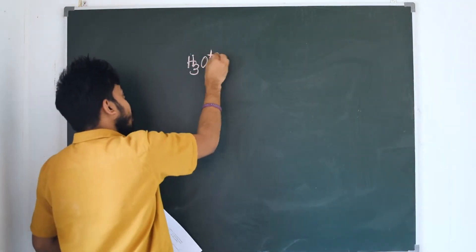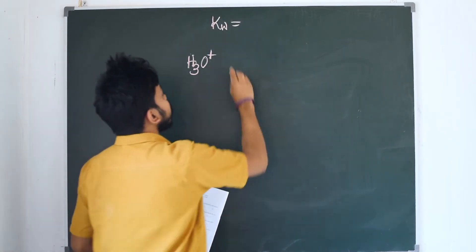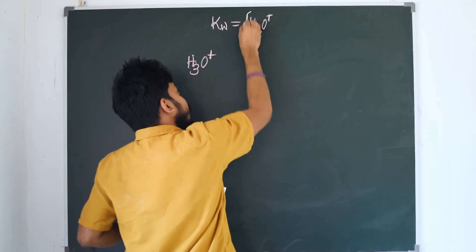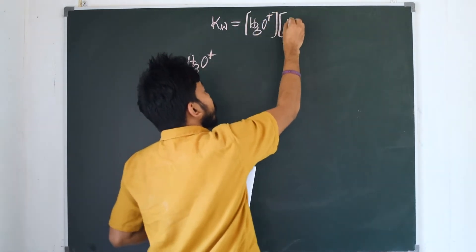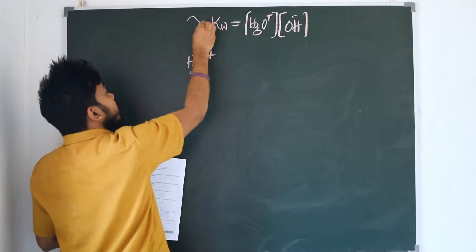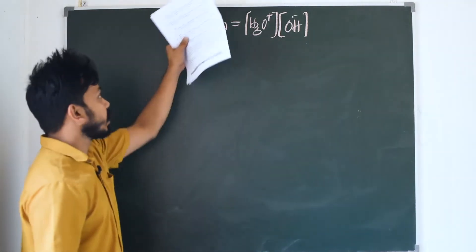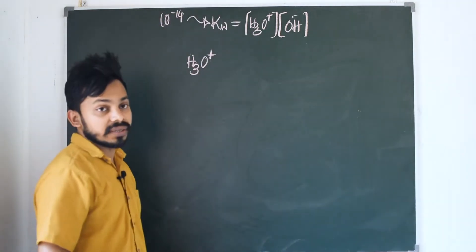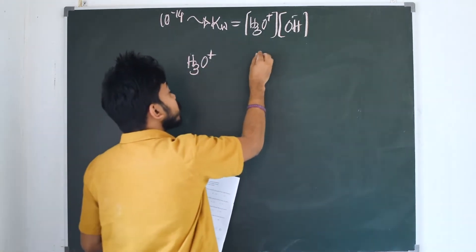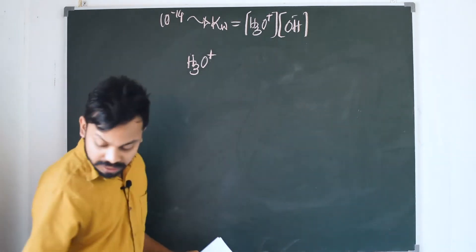KW is equal to H₃O⁺ concentration. KW is equal to H₃O⁺ times OH⁻ concentration, which is equal to 1.7 times 10⁻¹⁴. Then H₃O⁺ concentration is equal to OH⁻ concentration.